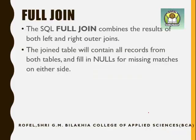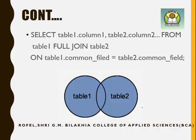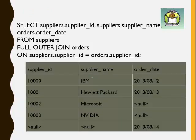Full join — it combines the results of both left and right outer joins. The joined table will contain all records from both tables and fill in NULL values for missing matches on either side. All values from both tables are returned. In our example, the common two values come, plus the exclusive left-side values, plus the exclusive right-side value. The clause is FULL JOIN with the same ON common field condition.